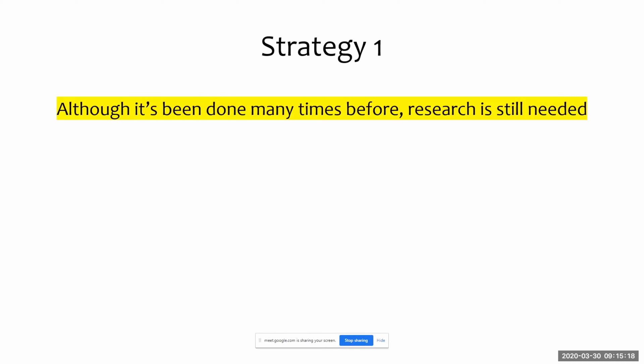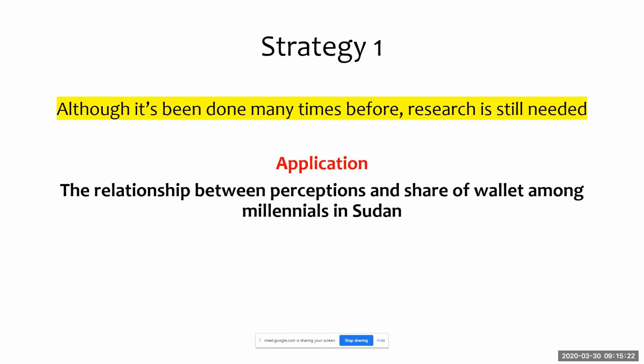Strategy one: it's already been done before, but research is still needed. For example, change the topic to 'the relationship between perceptions and share of wallet among millennials in Sudan.' Satisfaction is normally your perception toward something — service quality, value — but you can go deeper within loyalty and find variables not well studied, like share of wallet. This reframing has a much higher chance of getting accepted.